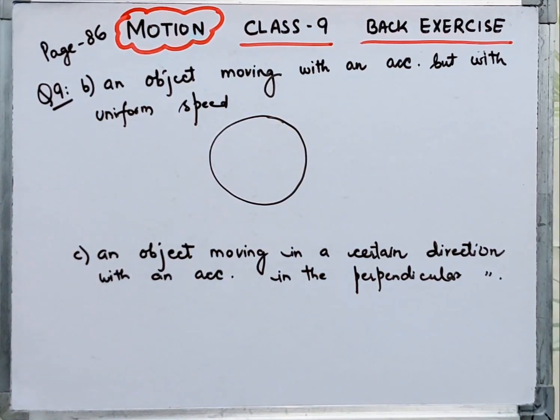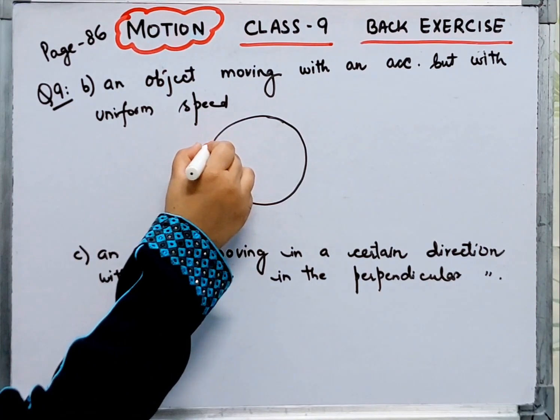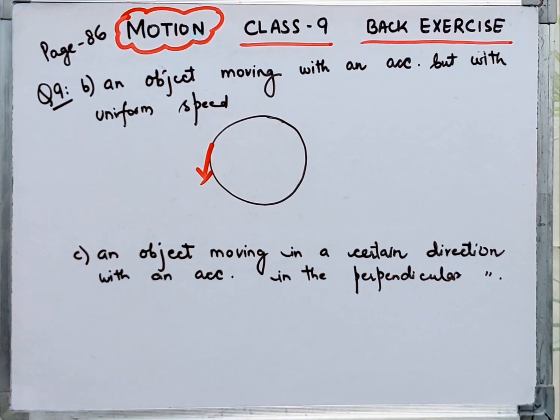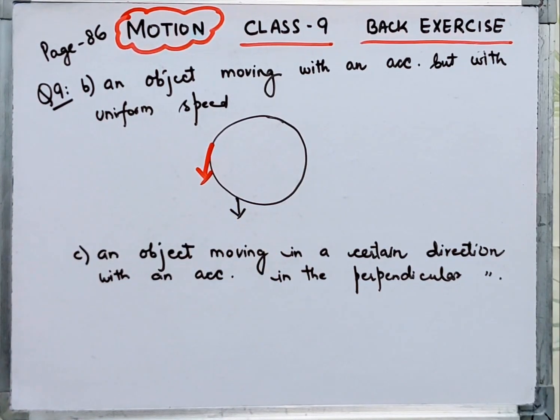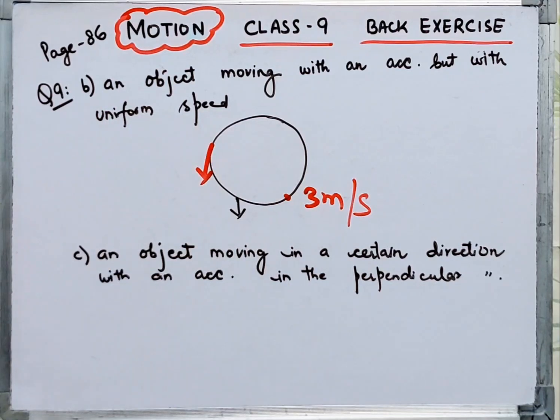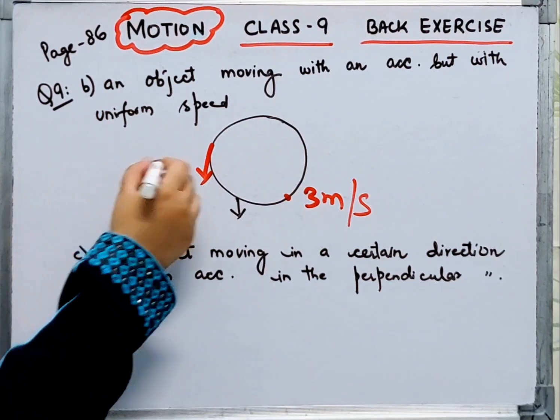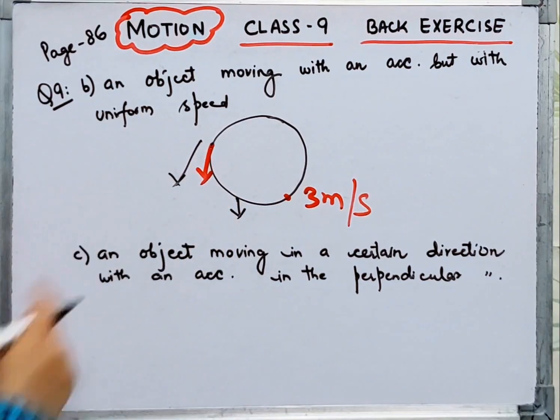So what happens when you travel in a circular motion? Suppose its uniform speed is 3 meters per second. If you look at the speed, it's 3 meters per second. So speed is uniform. But if you look at the velocity in a direction...